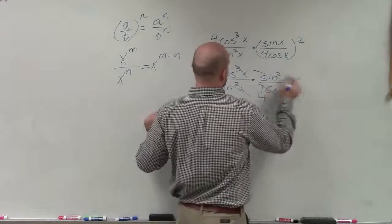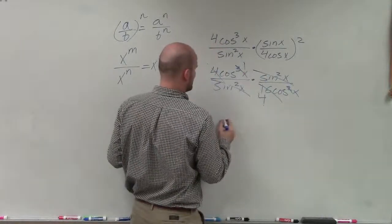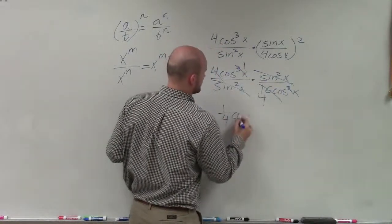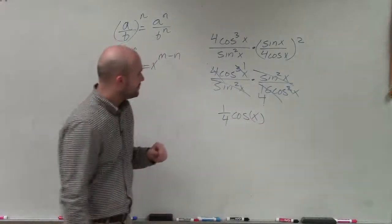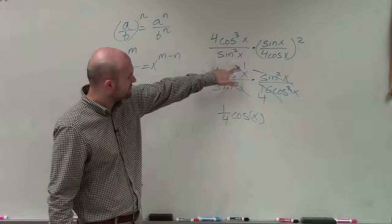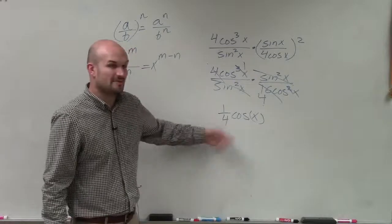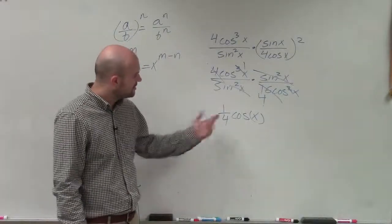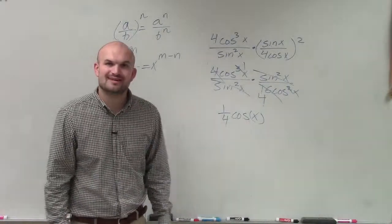So that would be a cosine, though, on the top. So therefore, I finally have 1 fourth cosine of x. And that would be my final answer, as the cosine is still left up top, and my 1 fourth is in the denominator. But I can rewrite that just as a fraction. But it would be left as 1 fourth cosine of x. Thanks.